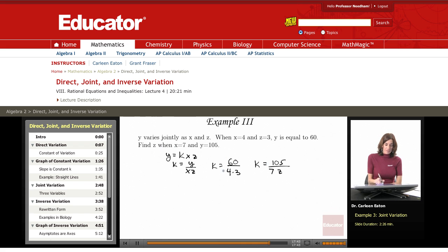So now I can form a proportion, because since this equals k and that equals k, these two equal each other. So 60 divided by 4 times 3 equals 105 divided by 7z. Well, this is 60 divided by 12 equals 105 divided by 7z.